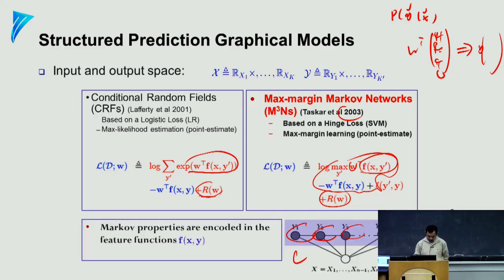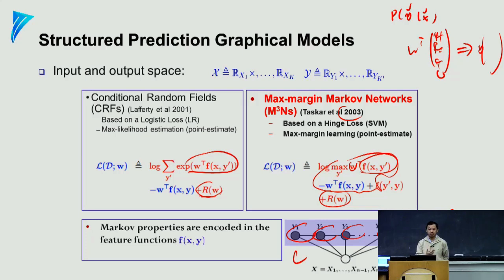That's actually the elegance of the graphical model literature. You can look at very different problems in the history of a decade or two and use a single equation to unify them. Then your algorithm — just like backprop in deep learning — can pretty much reuse a general optimization algorithm to solve all these problems.